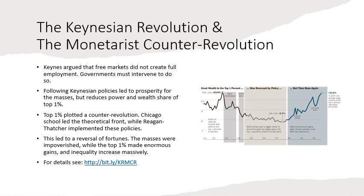There was long unemployment, and economic theory says that cannot happen because the labor market will equilibrate — the free market will automatically create full employment. One of the key points of Keynesian theory was that the free market does not create full employment and the government must intervene. When this was done and the banks were regulated, there was about 50 years where the share of income of the bottom 90% increased and the share of the top 1% started to decrease.